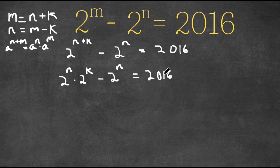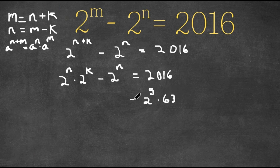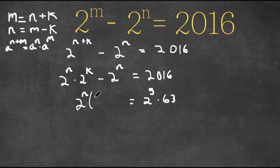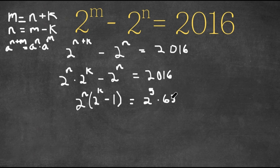So now what I'm going to do is I'm going to rewrite 2016 as 2 to the power of 5 times 63. And I'm going to factor out 2 to the power of n. So if I factor out 2 to the power of n, I get 2 to the power of n times 2 to the power of k divided by 2 to the power of n, which is simply 2 to the power of k, and 2 to the power of n divided by 2 to the power of n is 1, so minus 1. So we get 2 to the power of n times 2 to the power of k minus 1, and this is still equal to 2 to the power of 5 times 63.